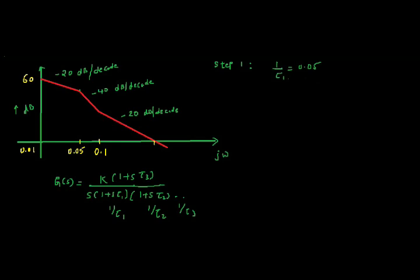The first breakaway point is at 0.05, so 1/tau1 = 0.05. Finding tau1: tau1 = 1/0.05 = 100/5 = 20. After the first breakaway point, the slope increases to −40 dB/decade.